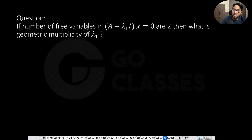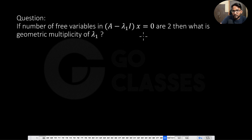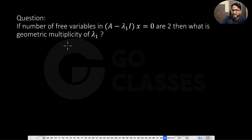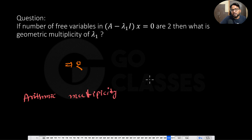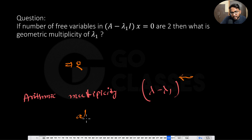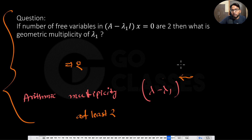Next question: if the number of free variables in (A minus lambda₁I) is 2, what is the geometric multiplicity of lambda₁? If there are 2 free variables, there are exactly 2 linearly independent eigenvectors — so GM equals 2. For the arithmetic multiplicity, since no symmetry is assumed, we can only say AM is at least 2.